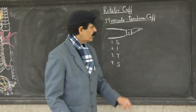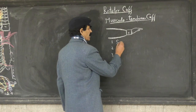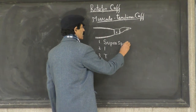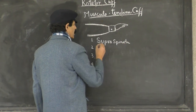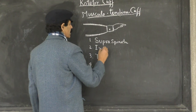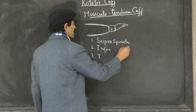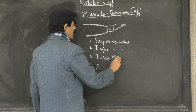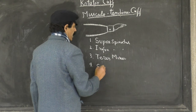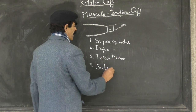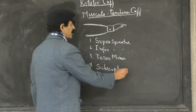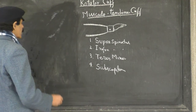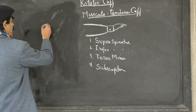So these four muscles are: S for Supraspinatus, I for Infraspinatus, T for Teres minor, and S for Subscapularis. All four constitute what is called the Rotator Cuff.